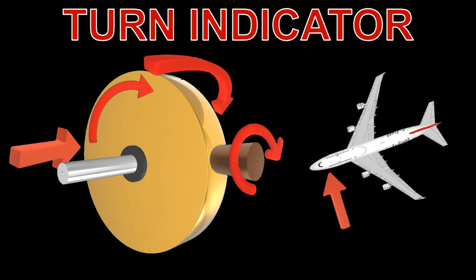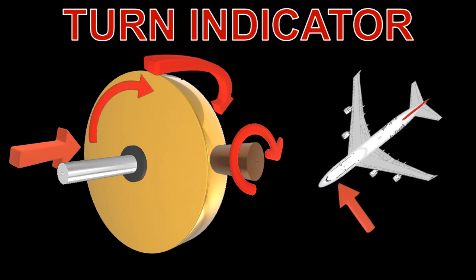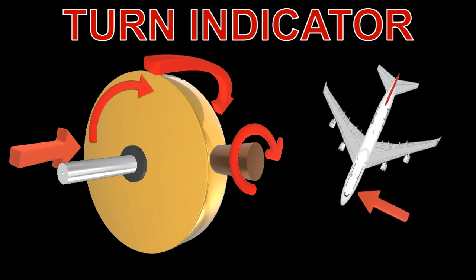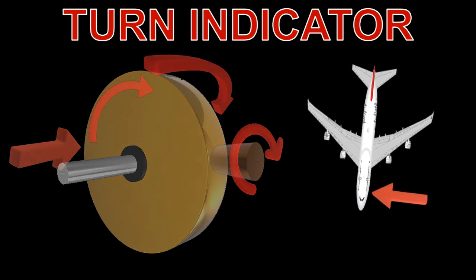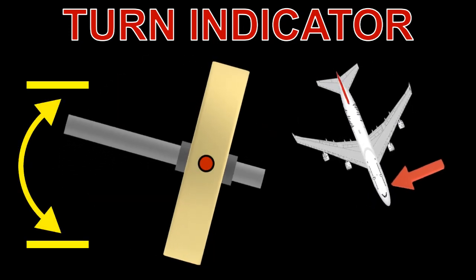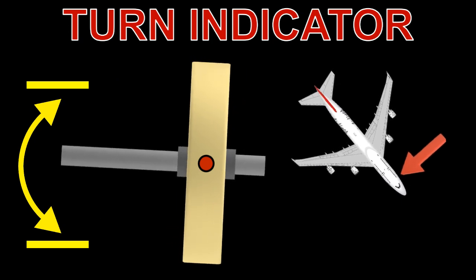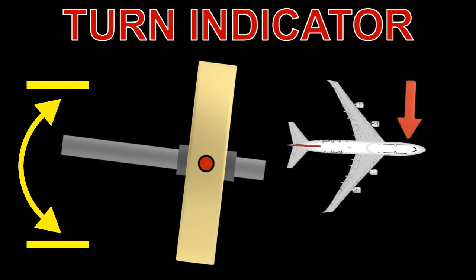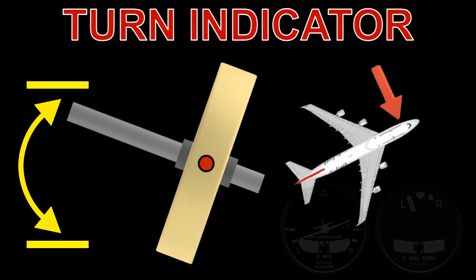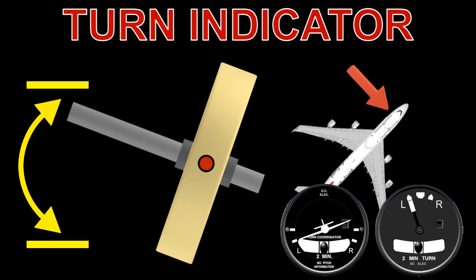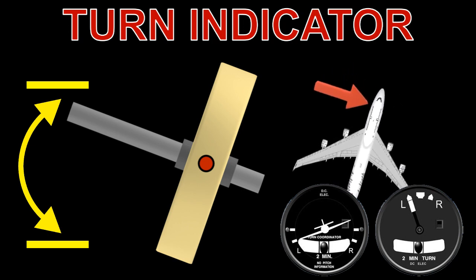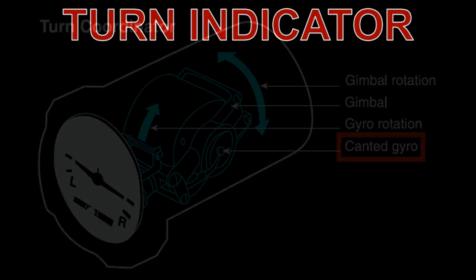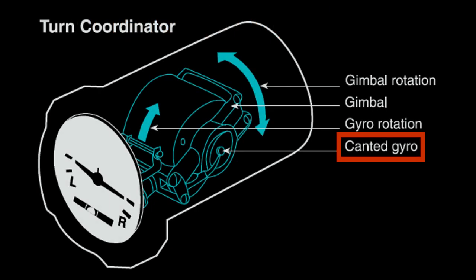The gyroscope spins on an axis that is 90 degrees relative to the direction of the applied torque force. The gyroscope and gimbal rotate around the roll axis with limited freedom against a calibrated spring. The force against the spring reaches an equilibrium. The gimbal is directly connected to the display needle, thereby indicating the rate of turn. In the turn coordinator, the gyroscope is canted 30 degrees from the horizontal so it responds to roll as well as yaw.